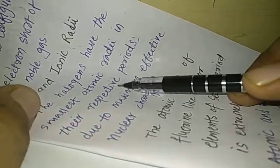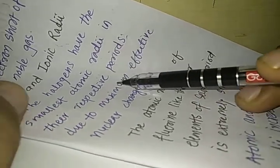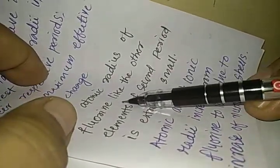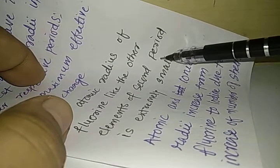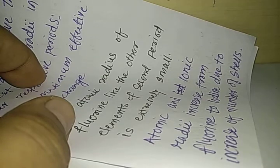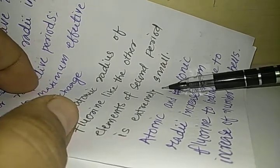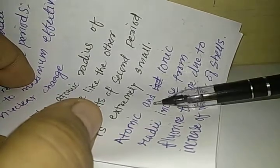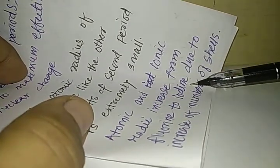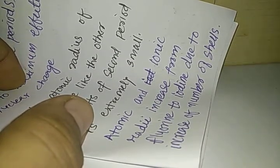These halogens have the smallest atomic radii in their particular period. The atomic radius of fluorine, like the other elements of second period, is extremely small. This is known as the second period anomaly. Fluorine, belonging to the second period, has got the smallest atomic radii.